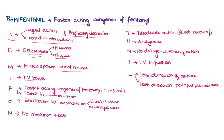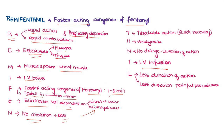I — it can be given through IV bolus or IV infusion. F stands for faster-acting congener of fentanyl, which acts within one to two minutes and its action fades off within 10 to 15 minutes. Its elimination is not dependent on liver or kidney disease, and there is no dose alteration needed in case of liver or kidney disease.